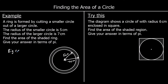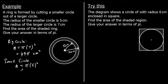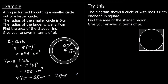For the big circle, the area is pi times the radius squared. The radius is 7, so it's pi times 7 squared. 7 squared is 49, so that's 49 pi centimetres squared. For the small circle, we've got pi times the radius squared, and the radius is 5, so it's pi times 5 squared. 5 squared is 25, so it's 25 pi centimetres squared. The shaded area is the area of the big circle take away the area of the small circle: 49 pi take away 25 pi. 49 take away 25 is 24, so we've got 24 pi centimetres squared.